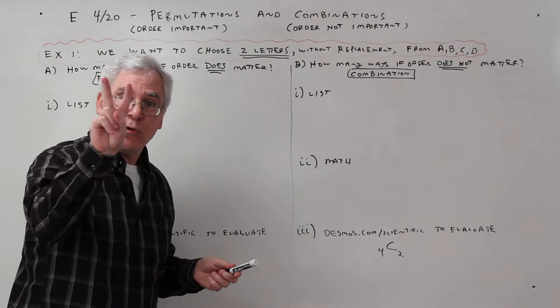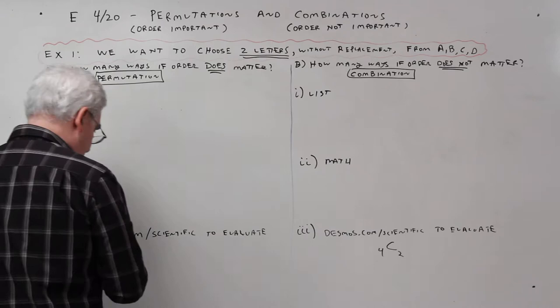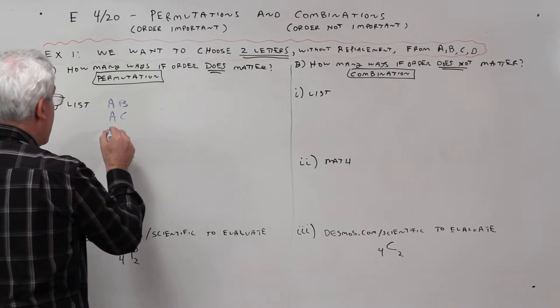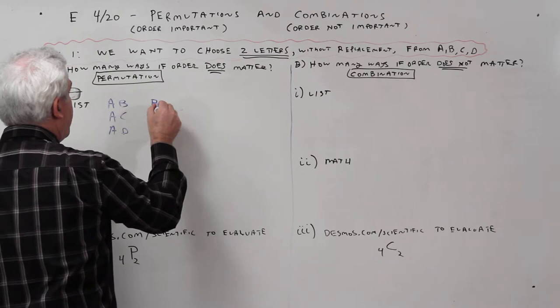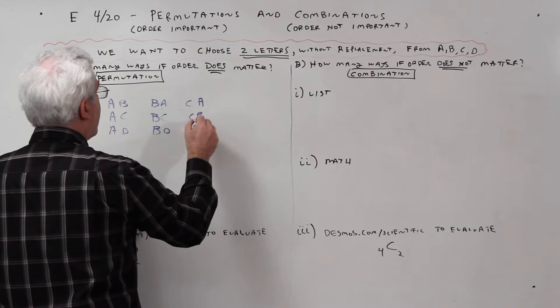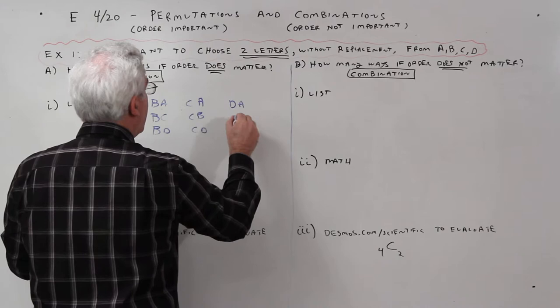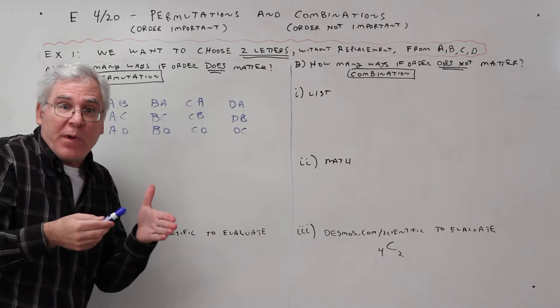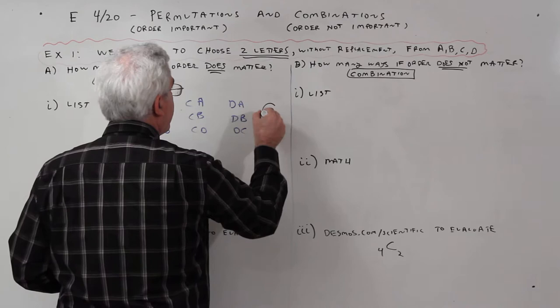Since I'm choosing two letters, I'm just going to say, let's be organized. I could go A, B, or A, C, or A, D. Or I could go B, A, B, C, B, D. Or I could go C, A, C, B, C, D. Or I could go D, A, D, B, and D, C. I try to do it methodically in alphabetical priority order. So, these are all different arrangements. I count them up and I get a total of 12.